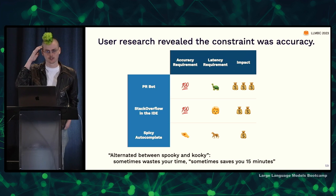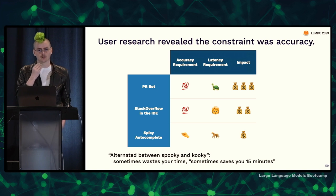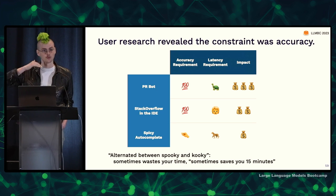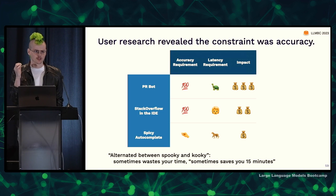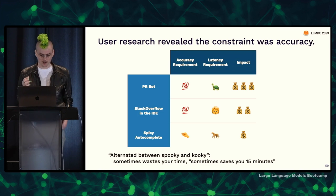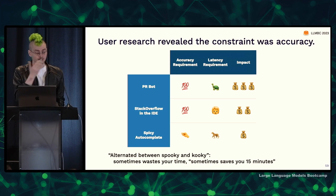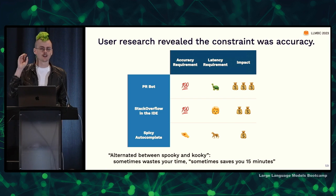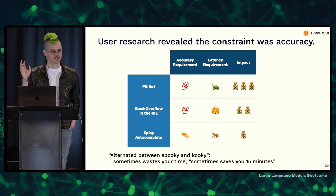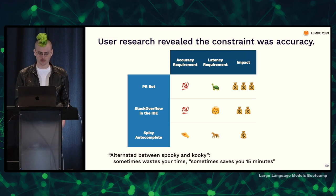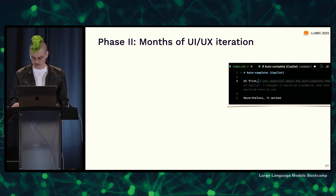What they found when they put these in front of users was that the real constraint was accuracy. The models just could not get accurate enough for the PR bot or Stack Overflow-in-the-IDE use case. What they found in particular was that sometimes the generation was kooky or silly — it would suggest something insane as the solution, make up software libraries that didn't exist, and be frustrating. But sometimes it would be spookily good and write the exact code you needed, saving you 15 minutes. This pattern — low probability, high reward events — doesn't work for the PR bot but can be made to work for autocomplete. So they doubled down on that one.